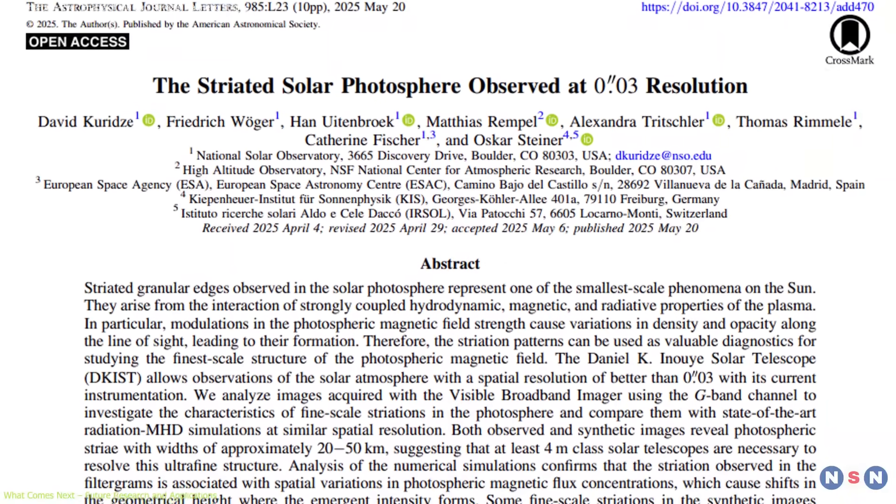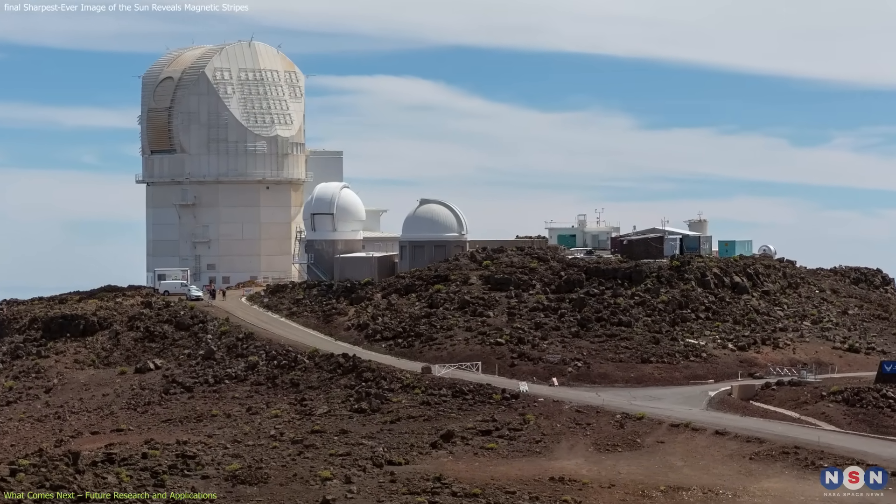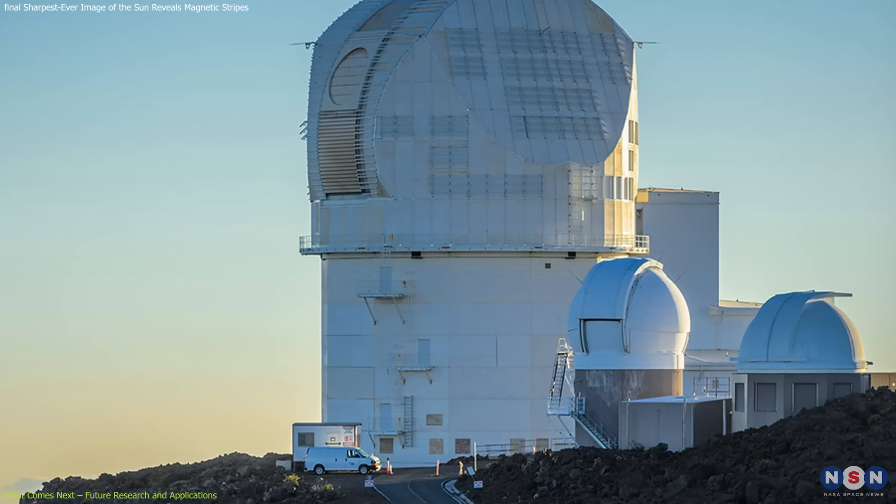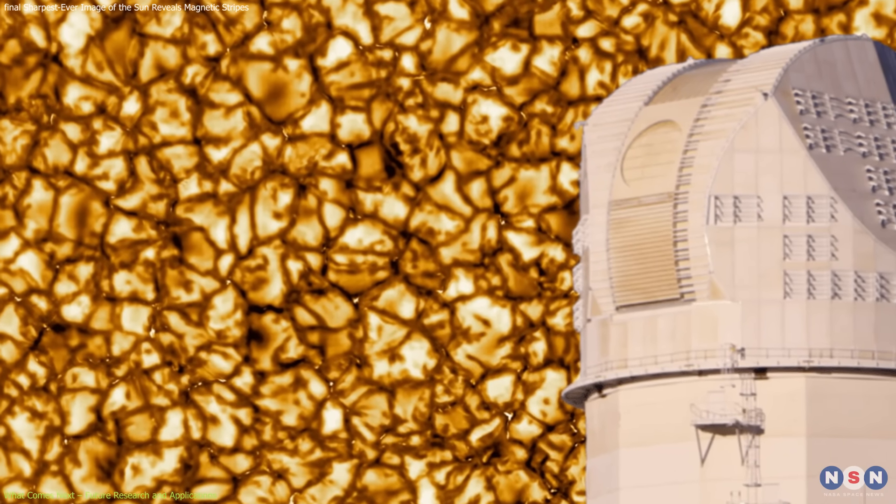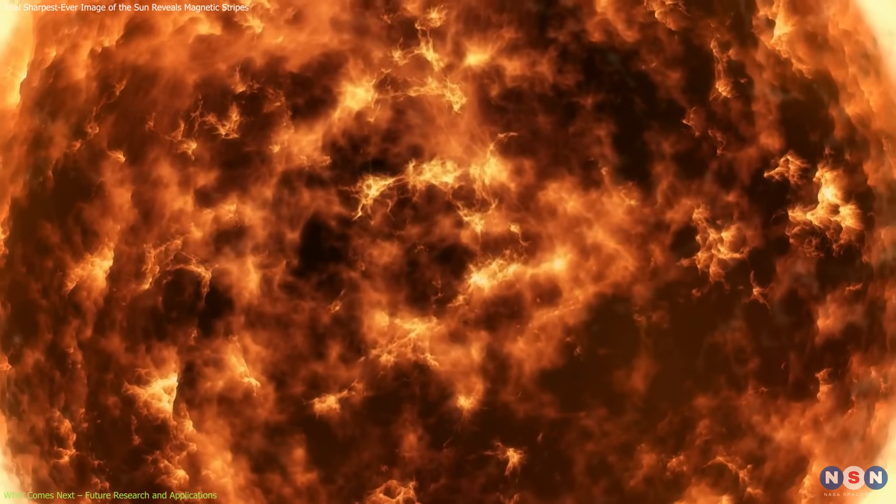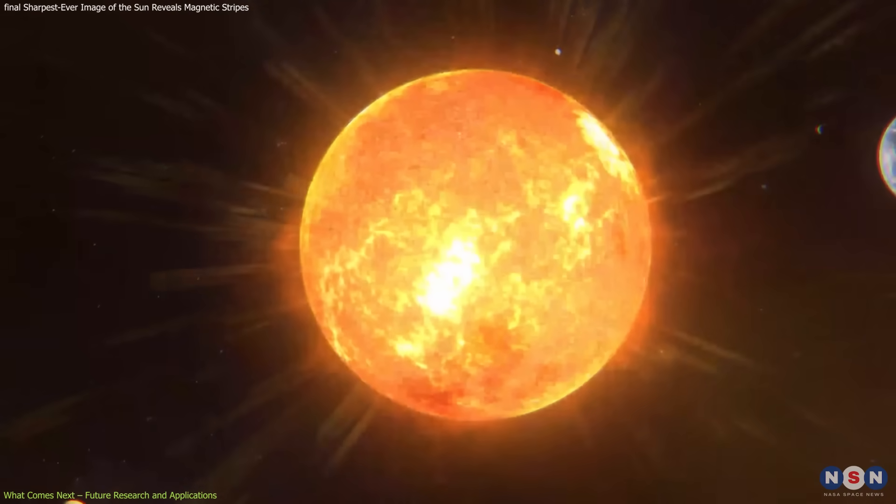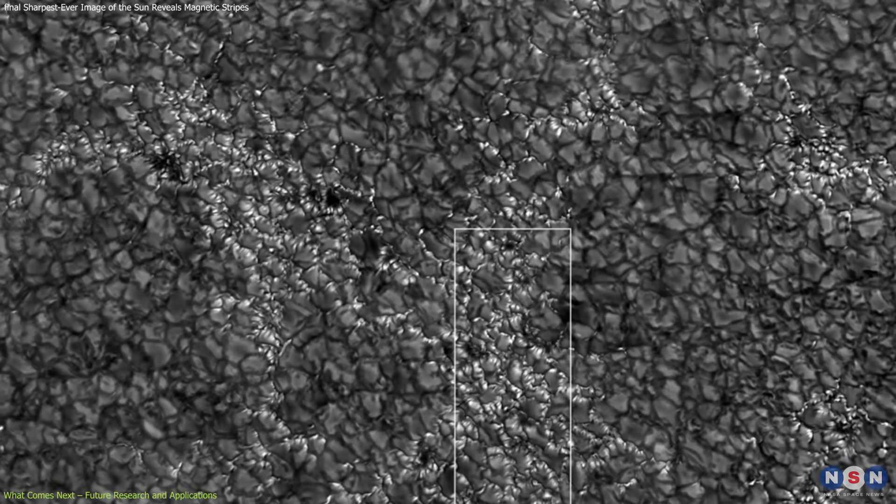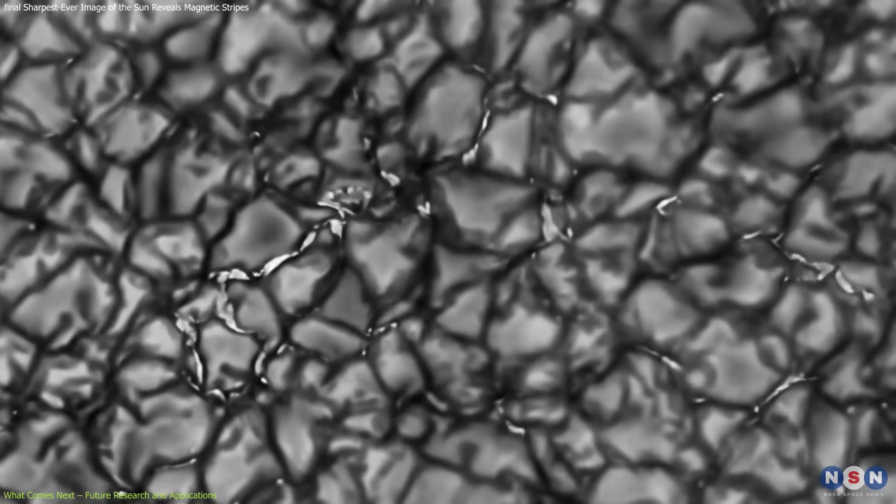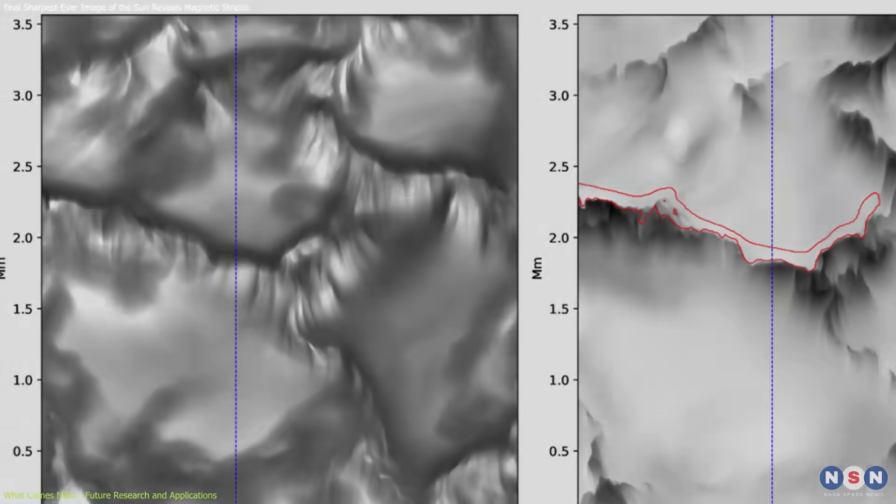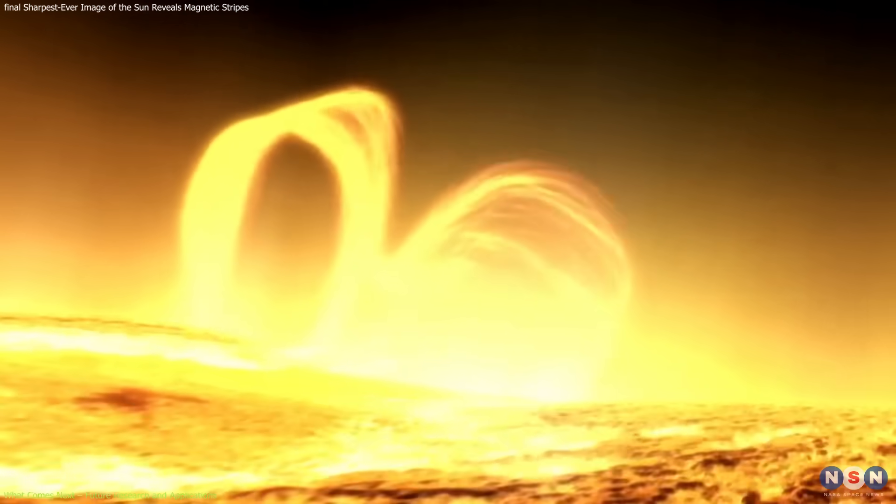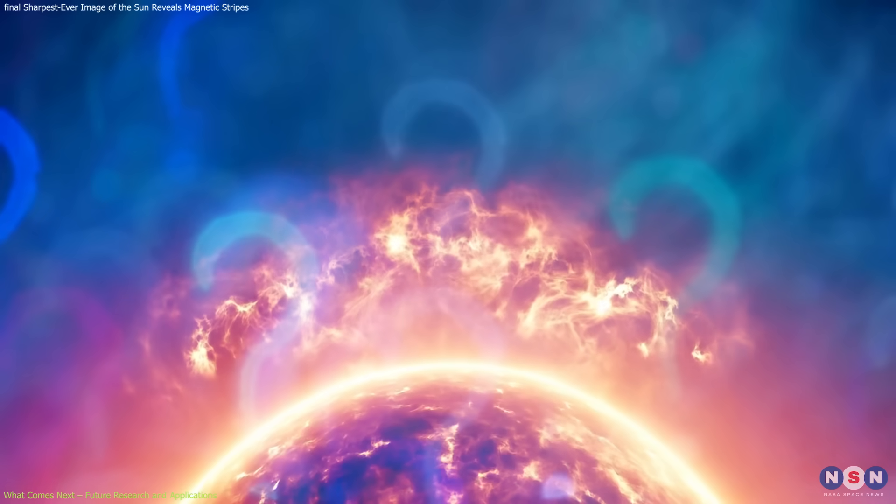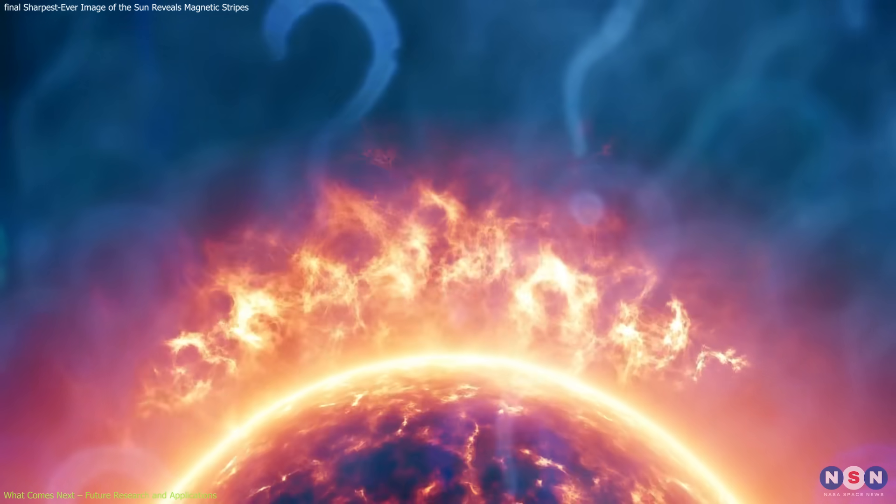The discovery of striations is just one of the first scientific milestones for the Daniel K. Inouye Solar Telescope, which officially began science operations in late 2022. The telescope was specifically designed to study the Sun's magnetic fields from the surface up into the corona, where solar winds originate. Now that researchers can identify and monitor these ultra-fine features, the next step is to observe how they evolve. Do they stay stable for hours or days? Do they shift with the solar cycle or react to nearby active regions? These are questions Inouye's extended observation campaigns will seek to answer.